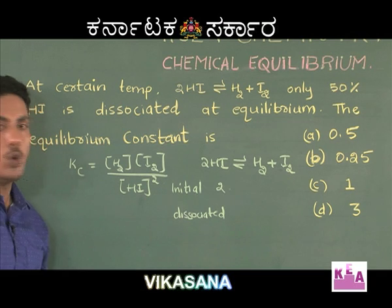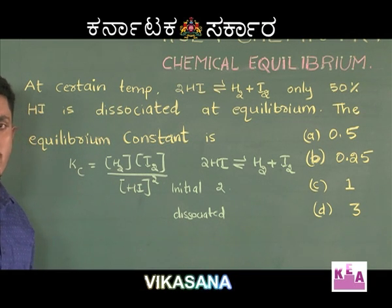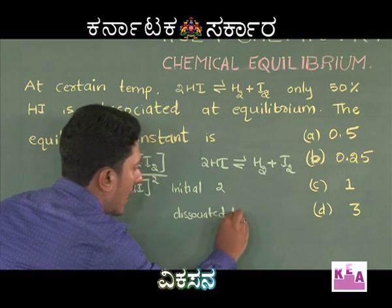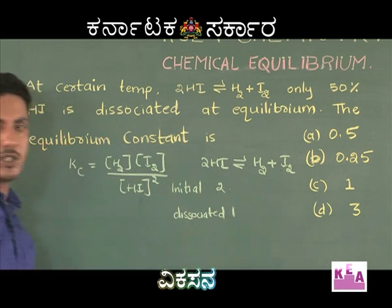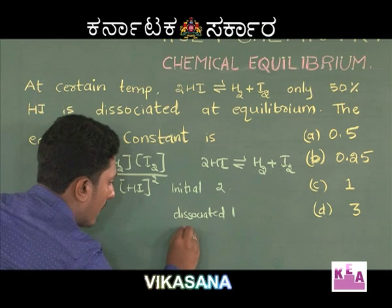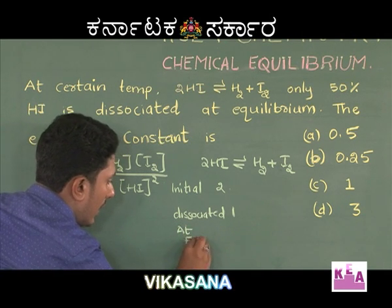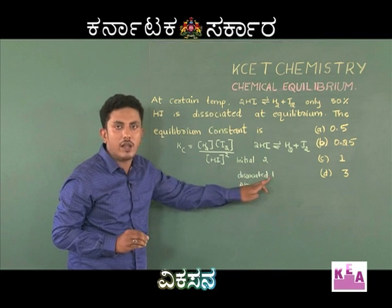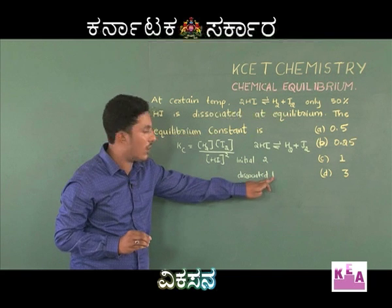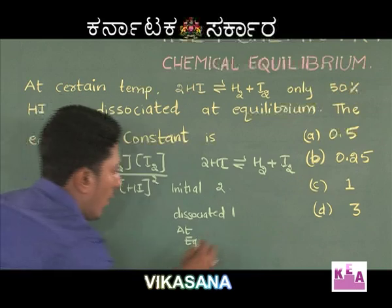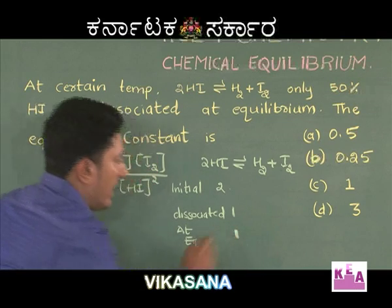If I consider 2 moles of HI to be taken initially, then 50% of HI dissociating indicates that out of 2 moles, 1 mole of HI dissociates. Then the number of moles at equilibrium: if 2 moles of HI is initially taken and 1 mole dissociates, then at equilibrium, 1 mole of HI will be remaining.